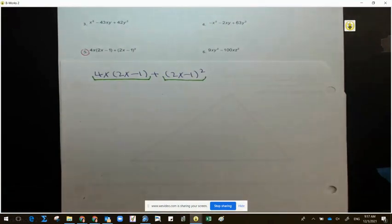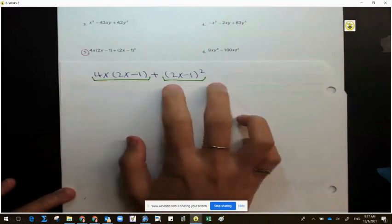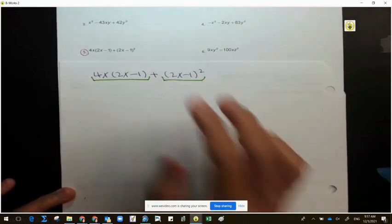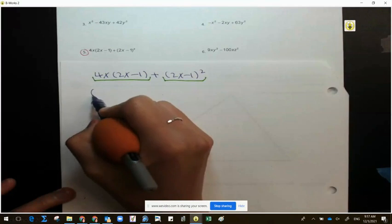So the first thing we have to do is find the GCF. And what is common between my first to my second? They both have 2x minus 1.